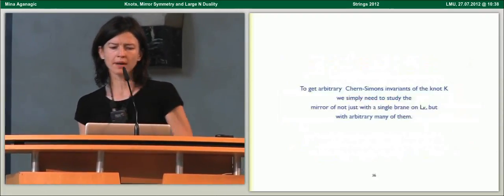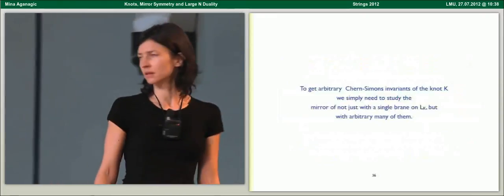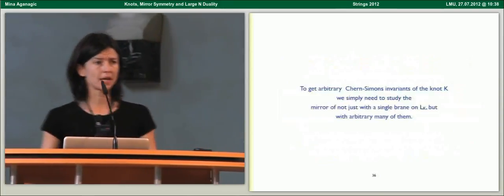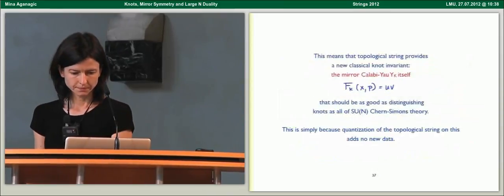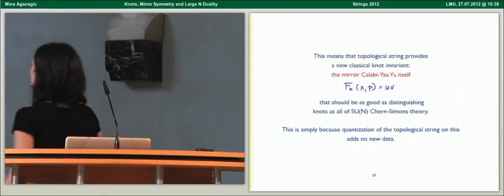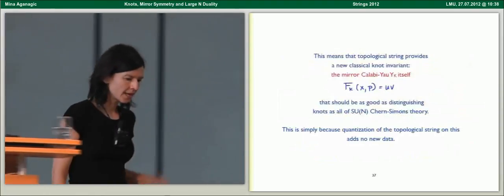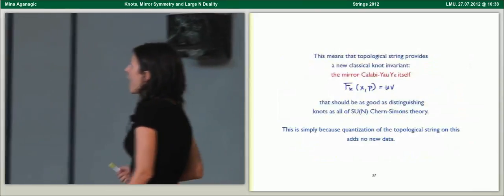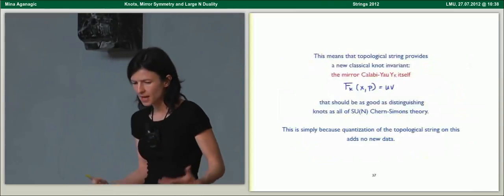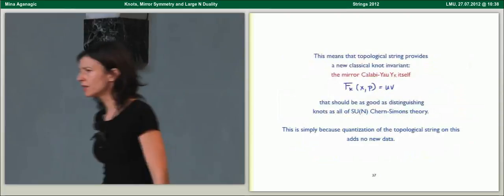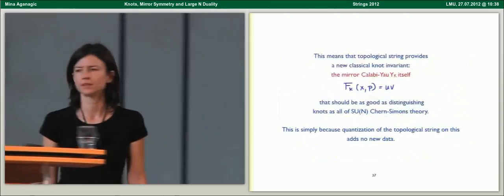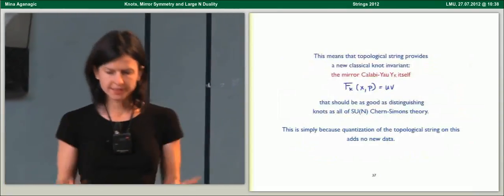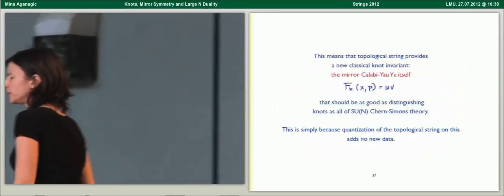More precisely, I studied only one brane, but to get arbitrary Chern-Simons invariants with a knot K, you need to study the mirror not just with a single brane but with arbitrarily many of them. But it's still the same Calabi-Yau geometry. This means that topological string gives you a new knot invariant: the mirror Calabi-Yau itself. By combination of large N duality and mirror symmetry, this should be as good at distinguishing knots as SU(N) Chern-Simons theory.